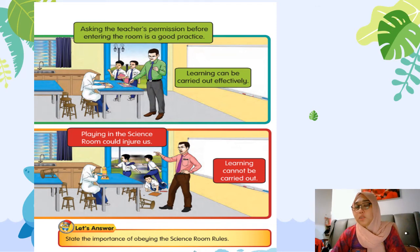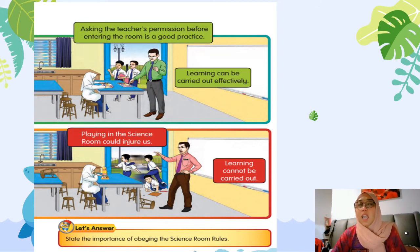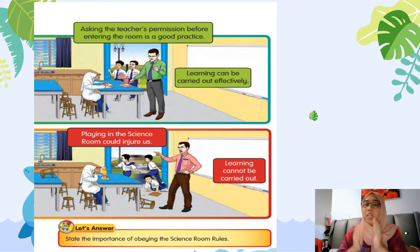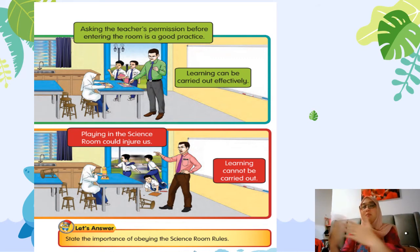Every time you want to enter the science room, you have to ask the teacher's permission before entering the room. It's a good practice. Awak perlu minta kebenaran dengan guru sebelum awak masuk di dalam bilik sains, kerana ia adalah satu perbuatan yang sangat baik. Kenapa kita perlu minta kebenaran? Supaya pembelajaran di dalam makmal sains boleh dilakukan dengan lancar dan berkesan. You have to ask permission from the teacher so that the teacher can stop and allow you to come in to the science room — supaya cikgu boleh berhenti sekejap dan membenarkan awak masuk, jadi tidaklah terganggu cikgu mengajar.